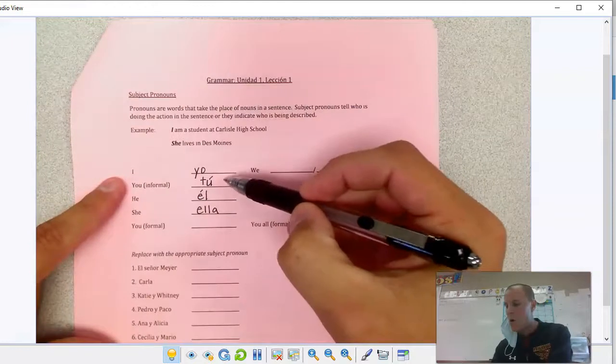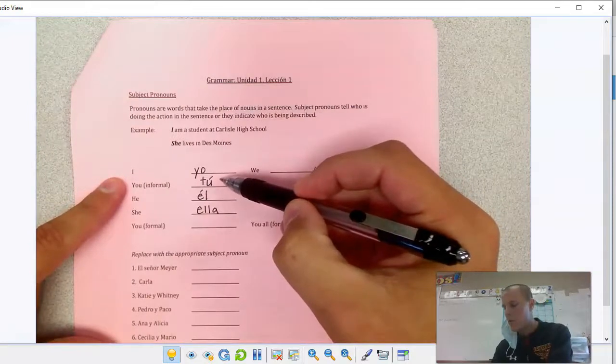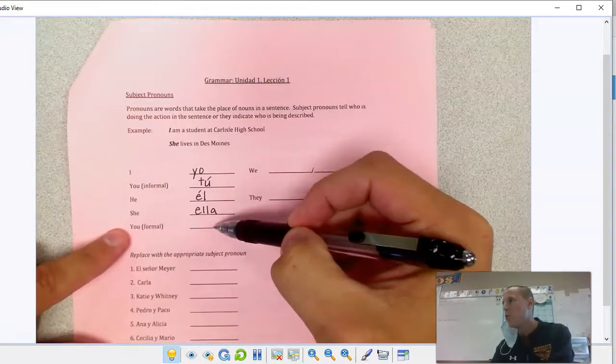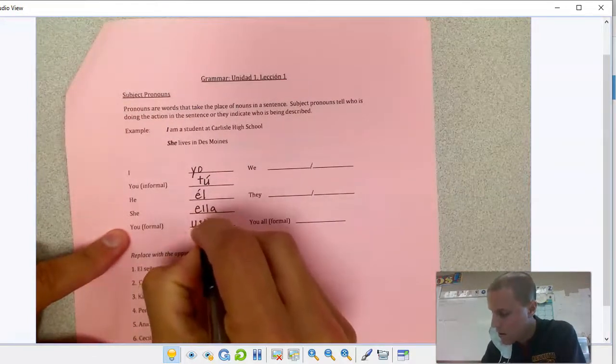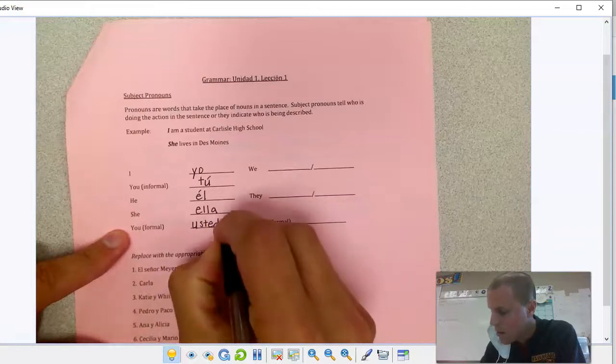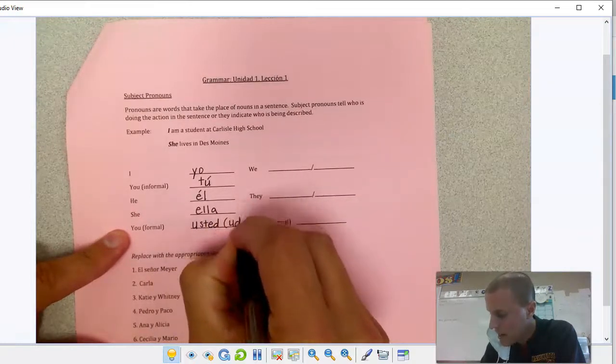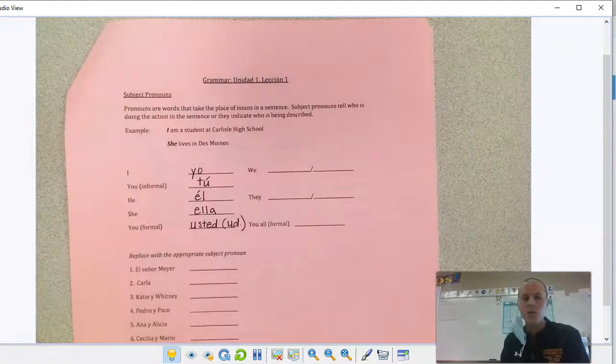We had an informal you, we have a formal you. We say como esta usted. Usted is the word for you formally. Sometimes you'll see it as UD, just shortened, usted.